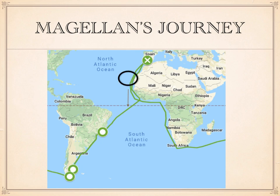They first headed to the Canary Islands, then followed along the coast of Africa before heading west for South America. They were forced to spend their winter in a place called San Julian in modern-day Argentina. The conditions were terrible — there was no settlement, no Europeans had ever been this far before. And there was a mutiny, meaning the men of the ship decided to try to take over, get rid of Magellan, and go back to Spain.